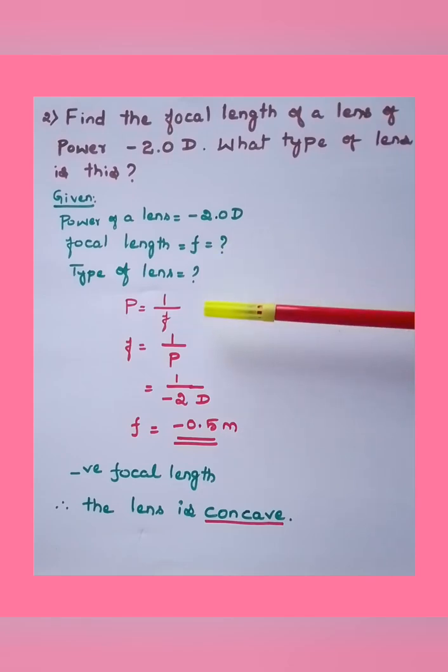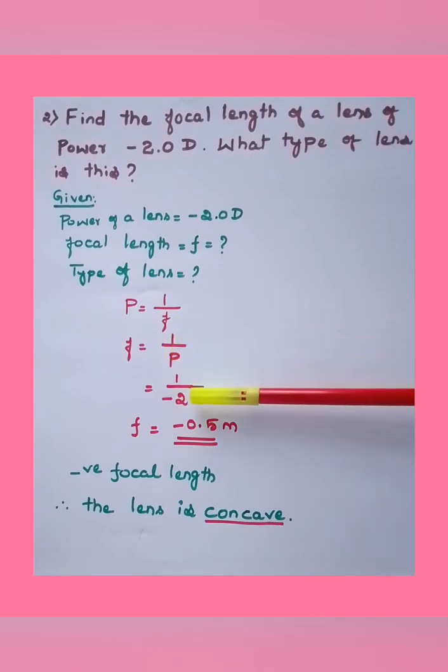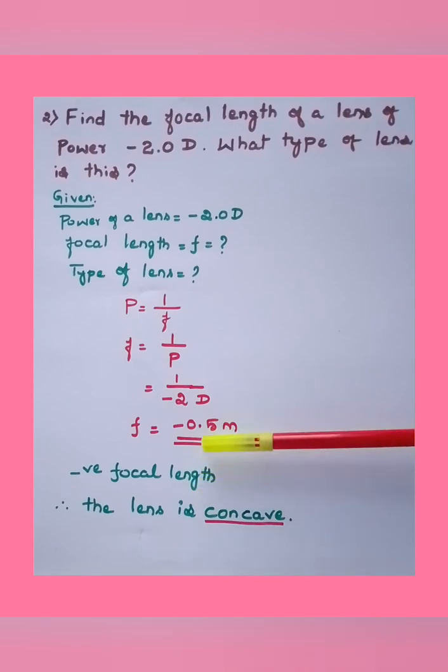You know the formula: P equals 1 by f. Change f as subject of the formula - f equals 1 by P. Substitute the value of P: 1 by minus 2.0. On simplifying, you get f equals minus 0.5 meter. So focal length is minus 0.5 meter.